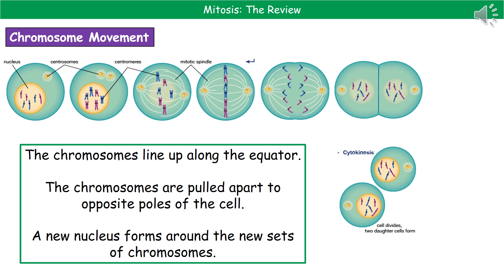Once you've actually replicated the entire DNA molecule, the chromosomes made of that DNA then have their movement phase. Once we've replicated them all, they line up in the centre of the cell called the equator. They are then pulled apart to the opposite poles of the cell — you can see that in the diagram. Once they've reached the opposite poles, a new nucleus then forms around them.